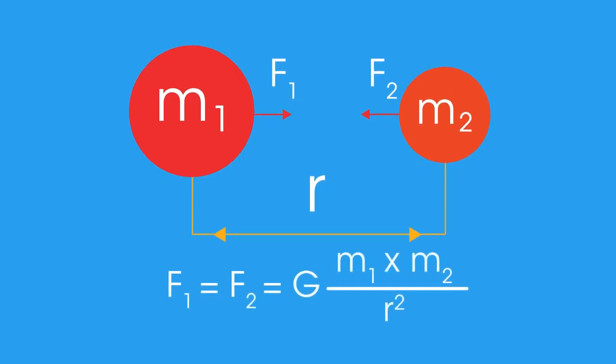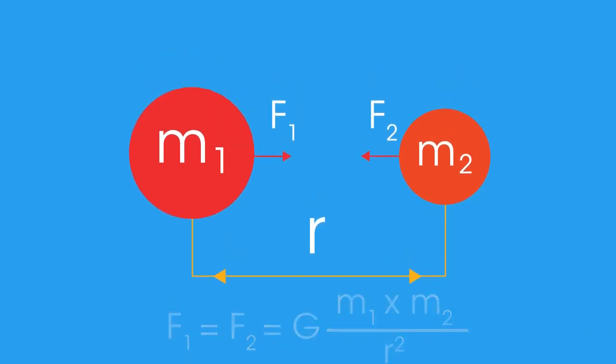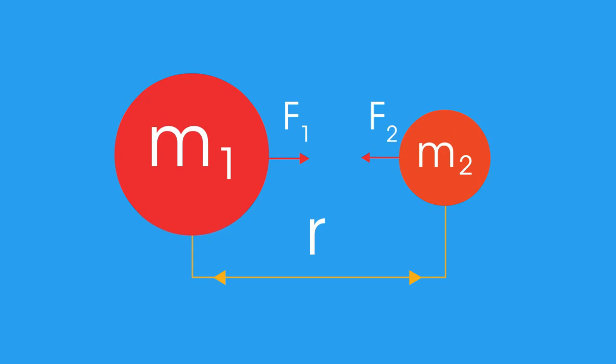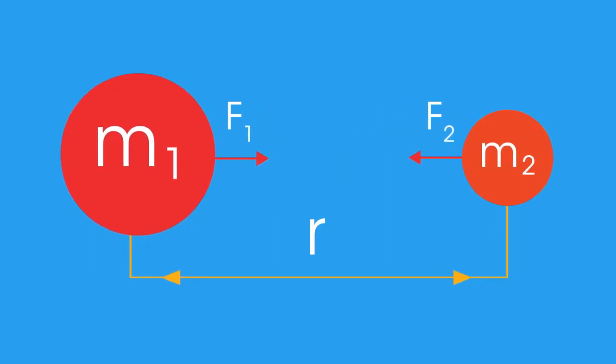So for example, doubling the mass of one of the objects also doubles the force of gravity experienced, but doubling the distance between the two objects results in the force being reduced to one-quarter of the original value.